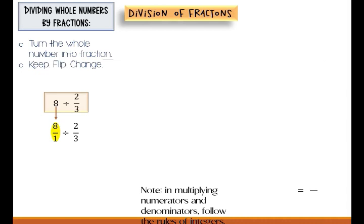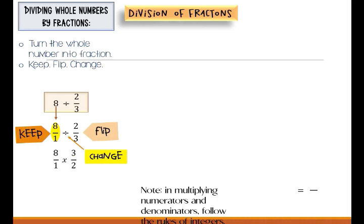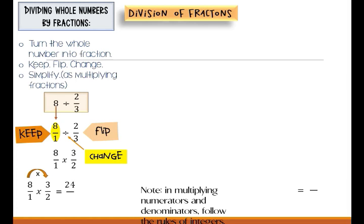The next step is keep-flip-change. You keep 8 over 1, you flip 2 over 3, and you change the division symbol to multiplication. That will become 8 over 1 times 3 over 2. Now apply the steps in multiplying fractions: 8 times 3 is equal to 24, and 1 times 2 is equal to 2. Since 24 is divisible by 2, that is equal to 12.